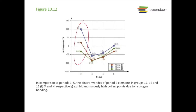This shows H2O, HF, and NH3 — the hydrides of fluorine, oxygen, and nitrogen — with much higher boiling points because of hydrogen bonding. That H-bond — very, very strong intermolecular force where they are able to interact much stronger with each other.